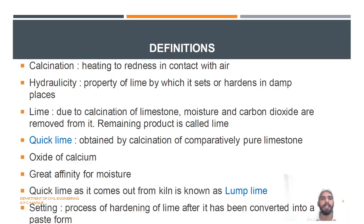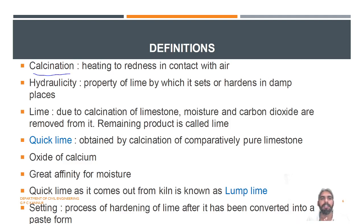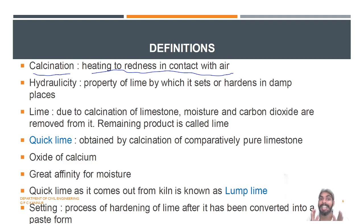Before going deep into the subject, first we will have some definitions of certain terms. If we study the terms thoroughly, then only you can understand the rest of the subject. First of all, what is calcination? Calcination is nothing but heating to redness in contact with air. In the presence of air, if you are heating the lime till redness — till red color is obtained — that is known as calcination.